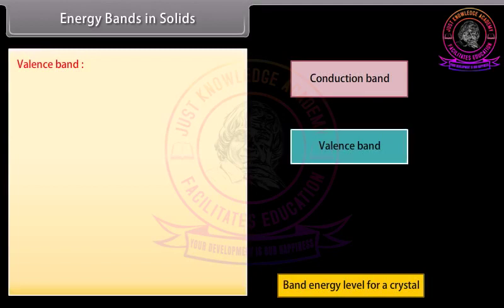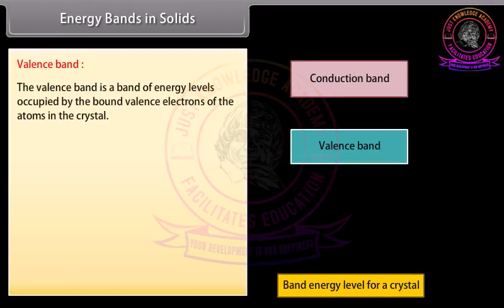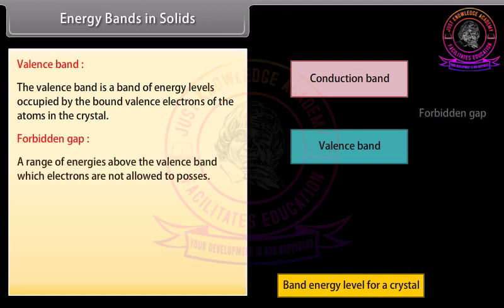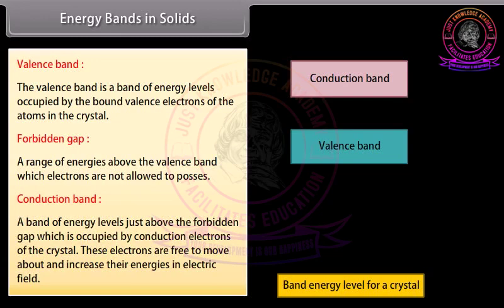Valence band: the valence band is a band of energy levels occupied by the bond-valence electrons of the atoms in the crystal. Forbidden gap: a range of energies above the valence band in which electrons are not allowed to exist. Conduction band: a band of energy levels just above the forbidden gap, occupied by conduction electrons of the crystal. These electrons are free to move about and increase their energies in an electric field.